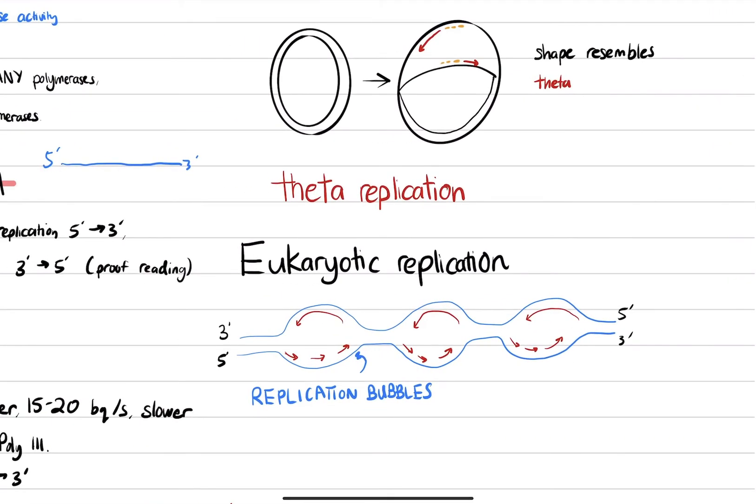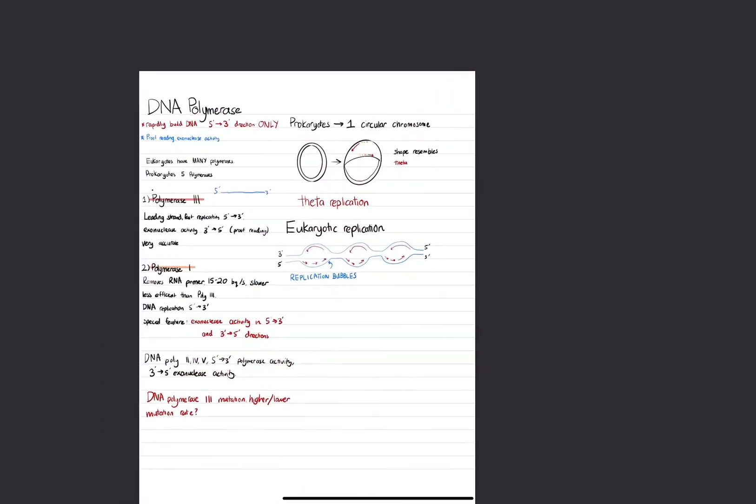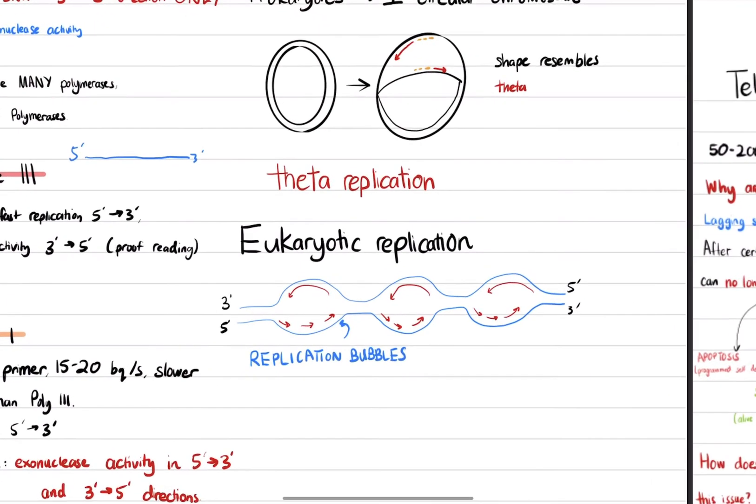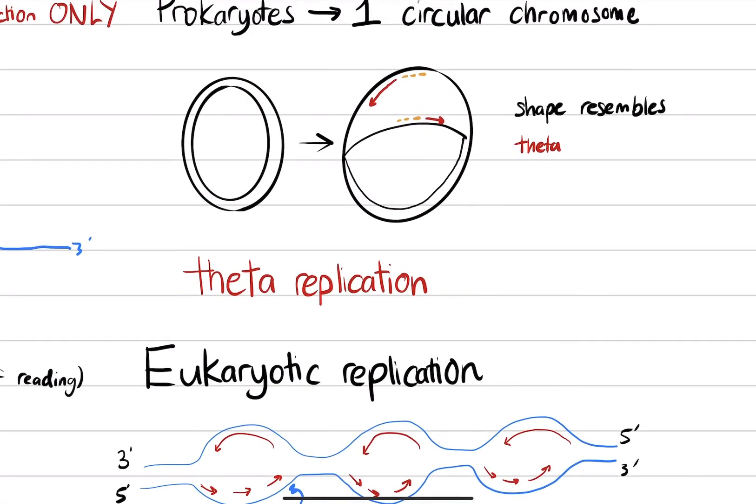And before we go, we're going to quickly talk about prokaryotic and have a comparison between prokaryotic and eukaryotic replication. So we know that prokaryotes only have one chromosome, and this one chromosome has only one origin point. They also have RNA primers, as you can see. And because they're circular, they're also called theta replication because it kind of looks like a theta shape. It resembles the structure of that, and it's also called theta mechanism because it's just going around the entire thing.